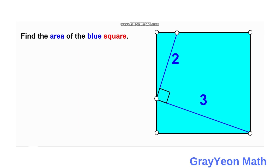What I want you to first notice is that we have these two right triangles — this one and this one — and they are right triangles because they are derived from this corner of the square, so one of their angles is from the corners of the square. Notice that because of the perpendicularity of the two-unit segment and the three-unit segment inside, if this is 90 degrees then these two angles must be complementary to each other. So if this is A and this is B, they should be complementary, equal to 90 degrees.